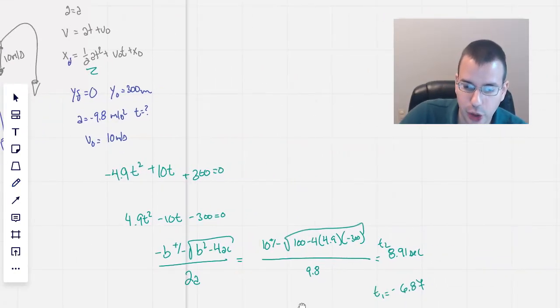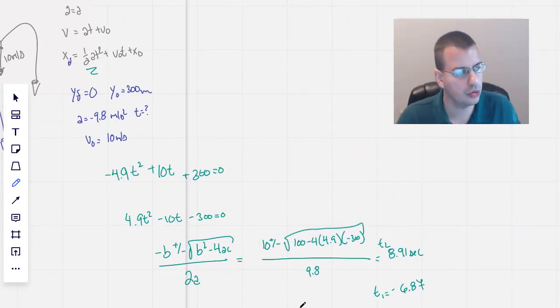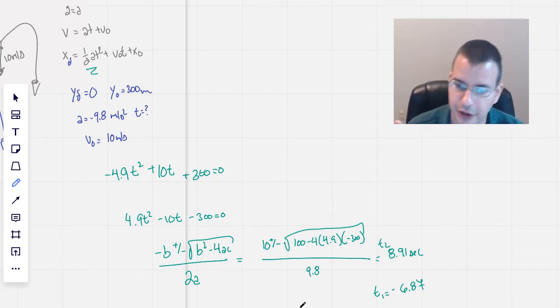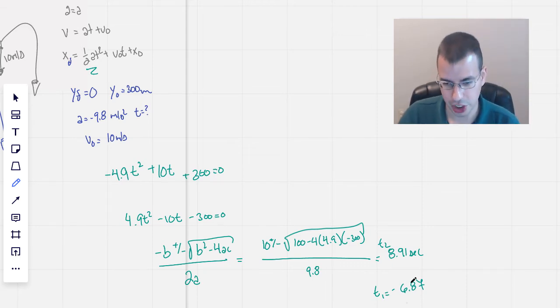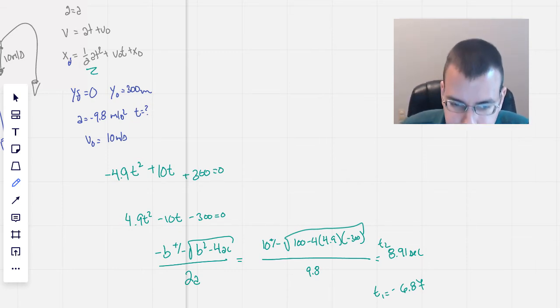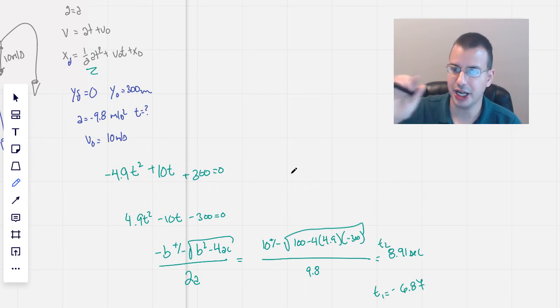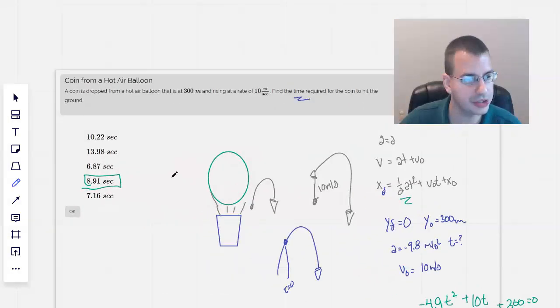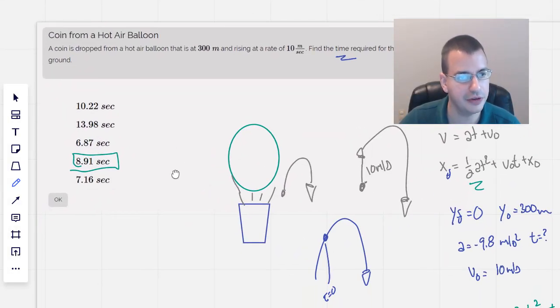Then we plug it in. We get a quadratic. We use a quadratic formula. We solve it, the equation, and we get two answers. One's negative, as expected, and then one's positive. And so that positive value is going to be how much time from where a coin is dropped that it will hit the ground. So I hope this helped. I hope this kind of gave you an idea of how to solve these sort of quadratic equations. And I will see you on the next one. Thank you.